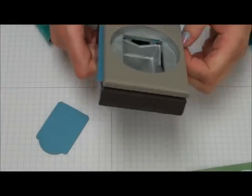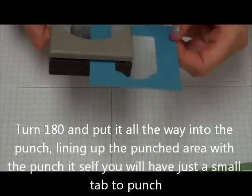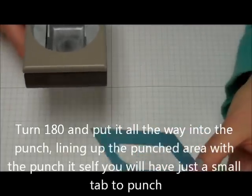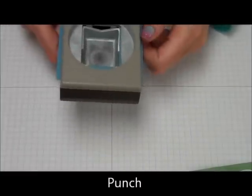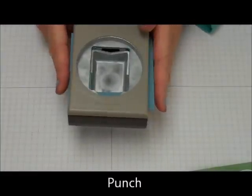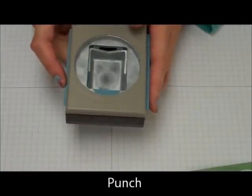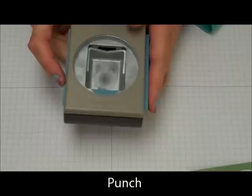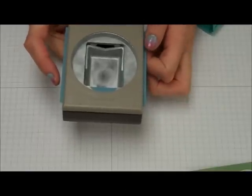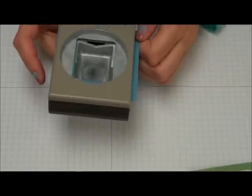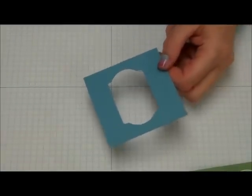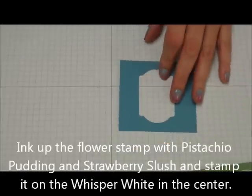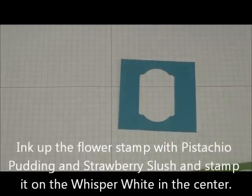It gives you a nice little tag there. Then what we're going to do is turn this around and again put this in there, but this time we're going to line up the sides, put it in as far back as possible, line up the sides there, and we're going to punch. That gives you a nice little window there.